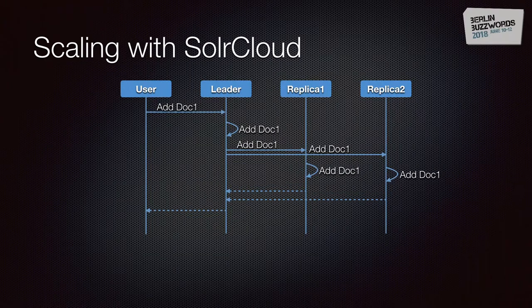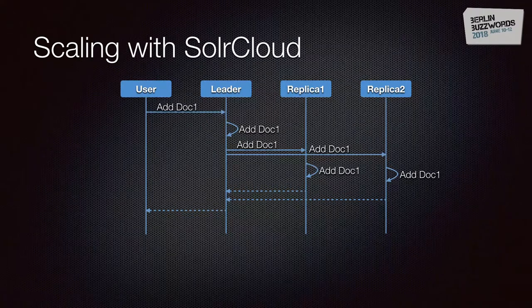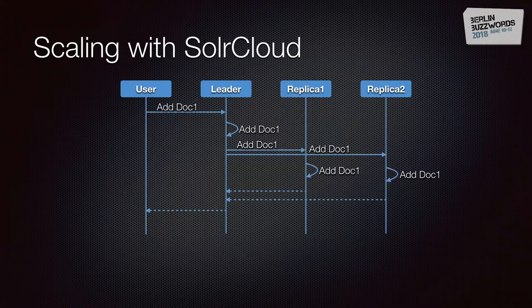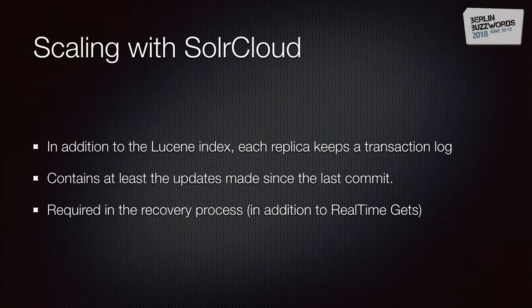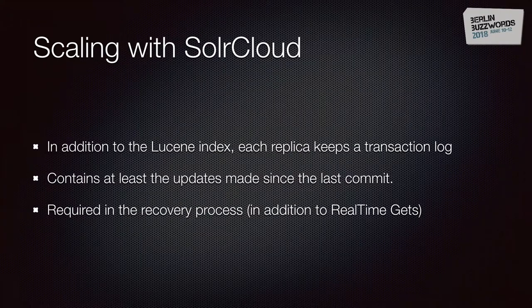A key benefit of distributed indexing is that it supports near real-time, so replicas can open a searcher and provide search for all the latest documents received. Another big feature added to SolrCloud was the transaction log — a Solr file that contains all the documents updated since the last commit. This file is needed for real-time get and also for recovery.